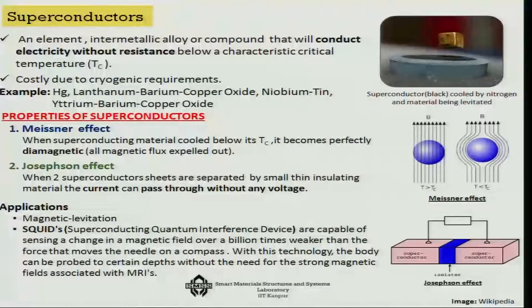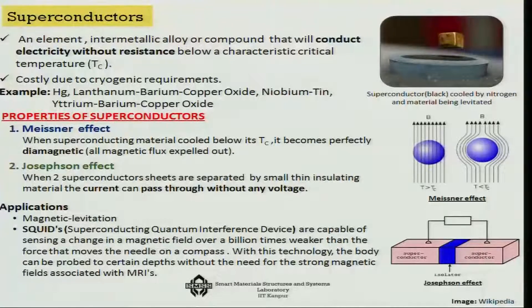Another group of materials are superconductors. These are much better than metals because they conduct electricity without any resistance, and with no resistance there is hardly any loss of electricity, but they are costly because of cryogenic requirements. They have two very important effects: one is the Meissner effect, which can be used in magnetic levitation, and another is the Josephson effect, which can be used in fuel cells, where you can actually pass electricity without any voltage generation. If you keep two superconducting elements with an insulating layer in between, that is the Josephson effect.